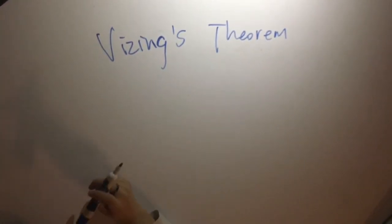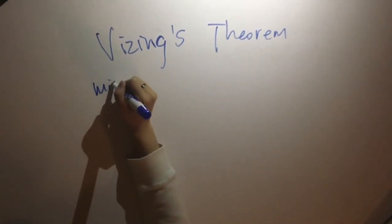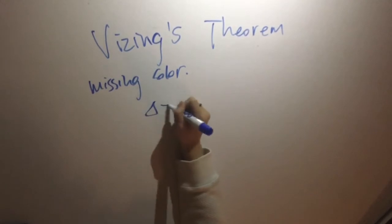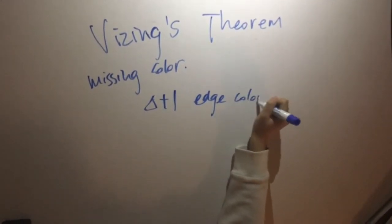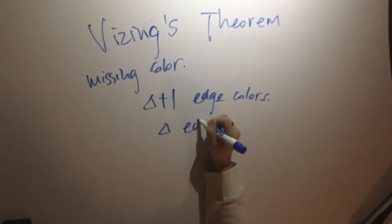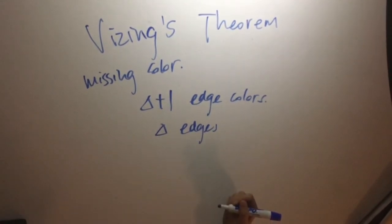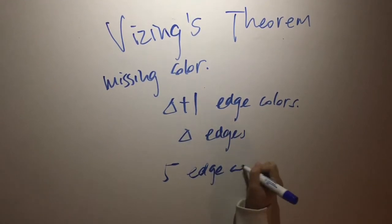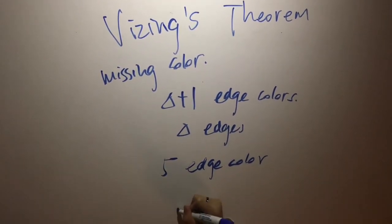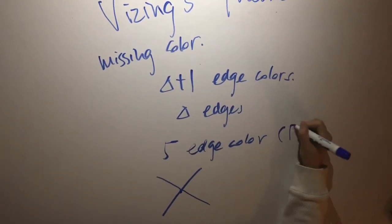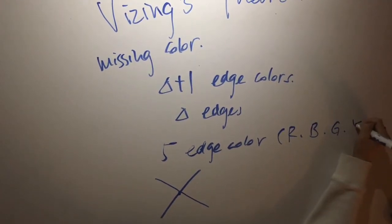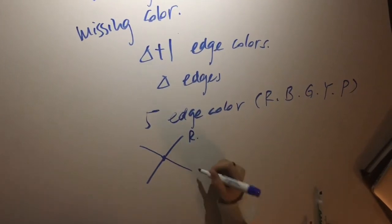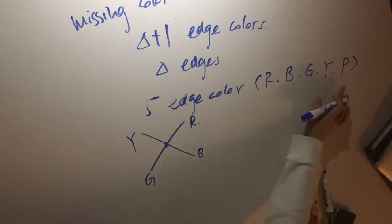Before moving to the next part, we should clarify two terminologies. The first is missing colors. Since there are delta plus one edge colors and no more than delta edges at each vertex, there must be at least one missing color. For example, if we use five edge colors to color a vertex with degree four — red, blue, green, yellow, and purple — we can mark the edges as red, blue, green, and yellow. So the color purple is the missing color.